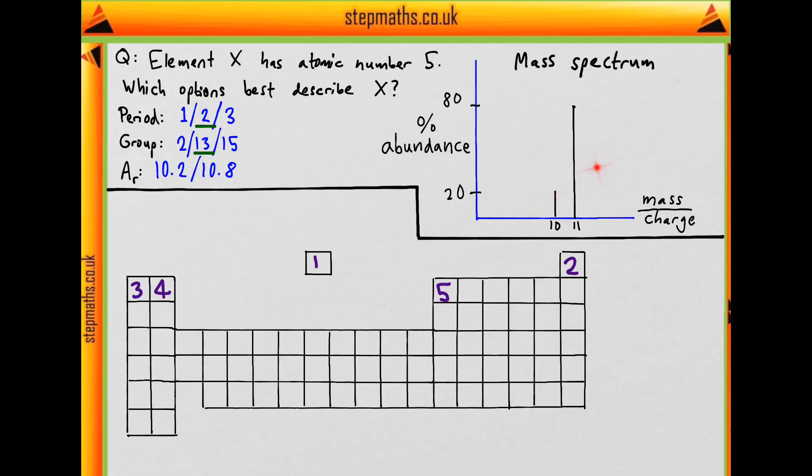What does that mean for the relative atomic mass? If it's the average weighted mass, it's going to be weighted towards the 11 isotope because we have more of it. So which one is it? It's going to be 10.8, because that's closer to 11 than to 10. This is our final answer describing element X, which corresponds to answer D.